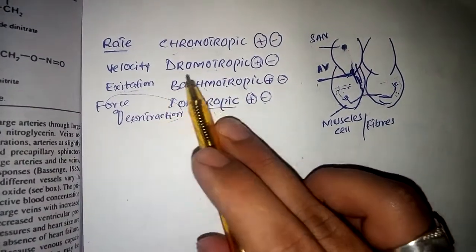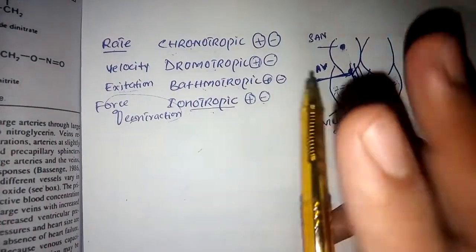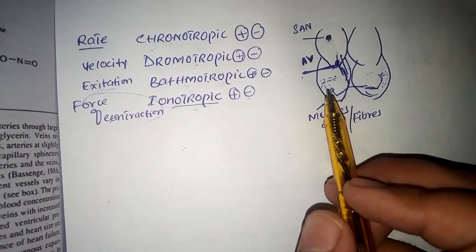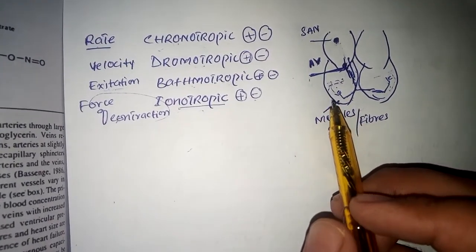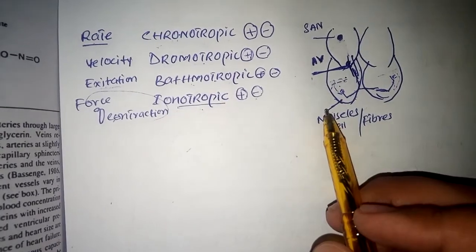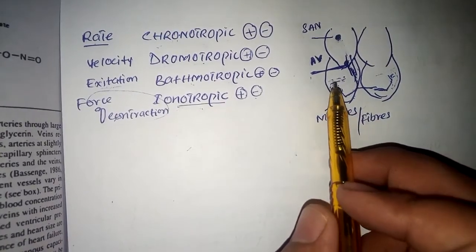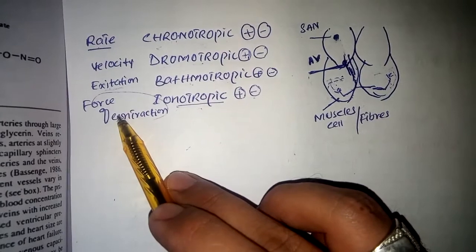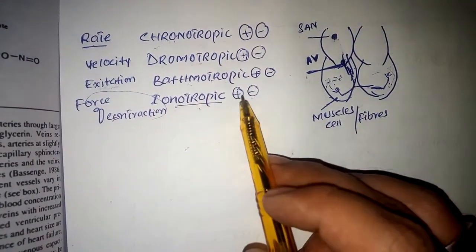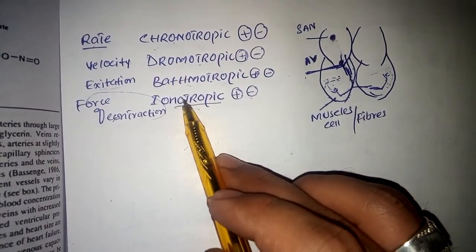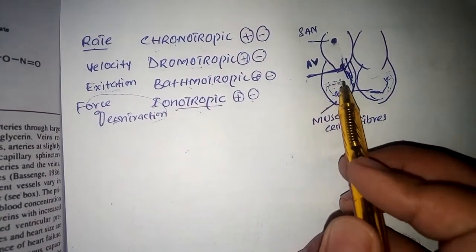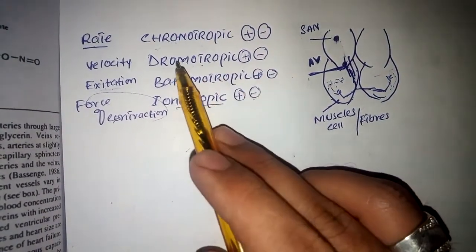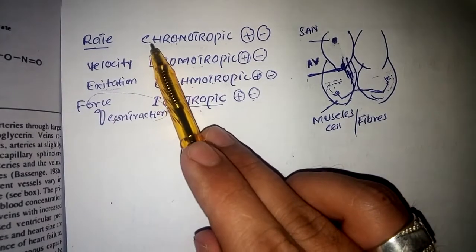Excitation is the bathmotropic effect. After excitation, the muscle fiber performs contraction. This contraction is of two types — strong and weak. A strong force of contraction is known as a positive inotropic effect, and a weak force of contraction is known as a negative inotropic effect.